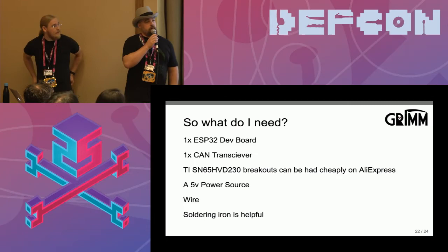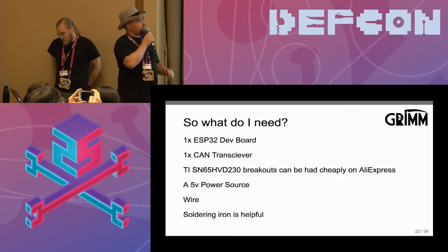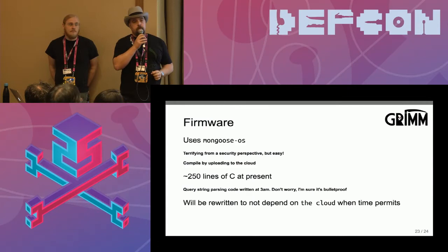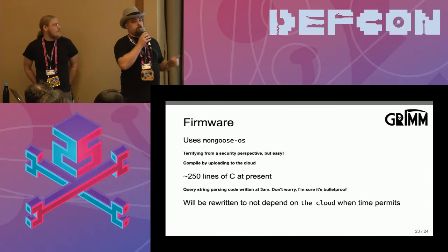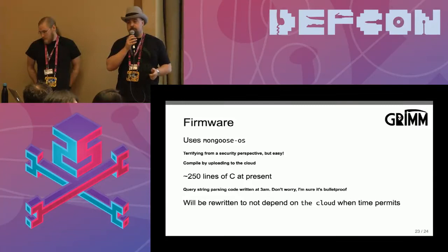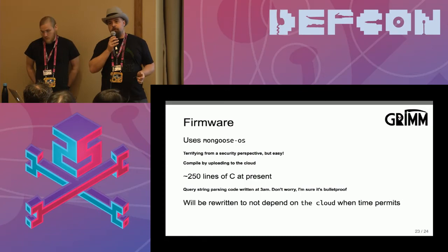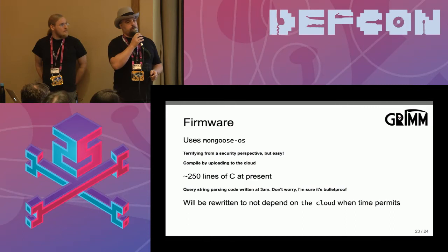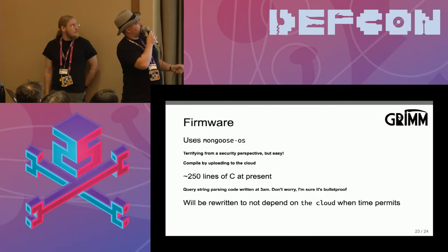Here's a slide with everything you need. You need an ESP32 dev board and a CAN transceiver. For the transceiver, if you can find it, get the 232, not the 230 — there's basically just one fewer pin you have to mess around with. Make sure you get a 3.3-volt transceiver, because the ESP32 is a 3.3-volt part and most CAN transceivers I've seen are 5-volt parts. You need a 5-volt power source — there's usually a voltage regulator on the ESP32 dev board to step down from 5 to 3.3 volts. You also need some wire and possibly a soldering iron. The total cost, assuming you already have a soldering iron and a power source, is less than ten bucks.